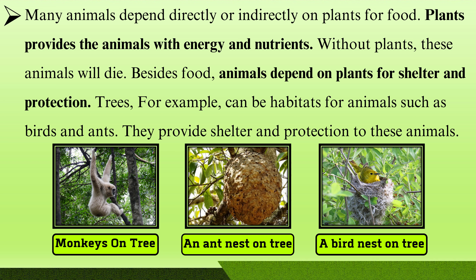Besides food, animals also depend on plants for shelter and protection. Trees, for example, can be habitats for animals such as birds and ants. They provide shelter and protection to these animals — such as a monkey on the trees, an ant nest on trees, and a bird nest on trees.